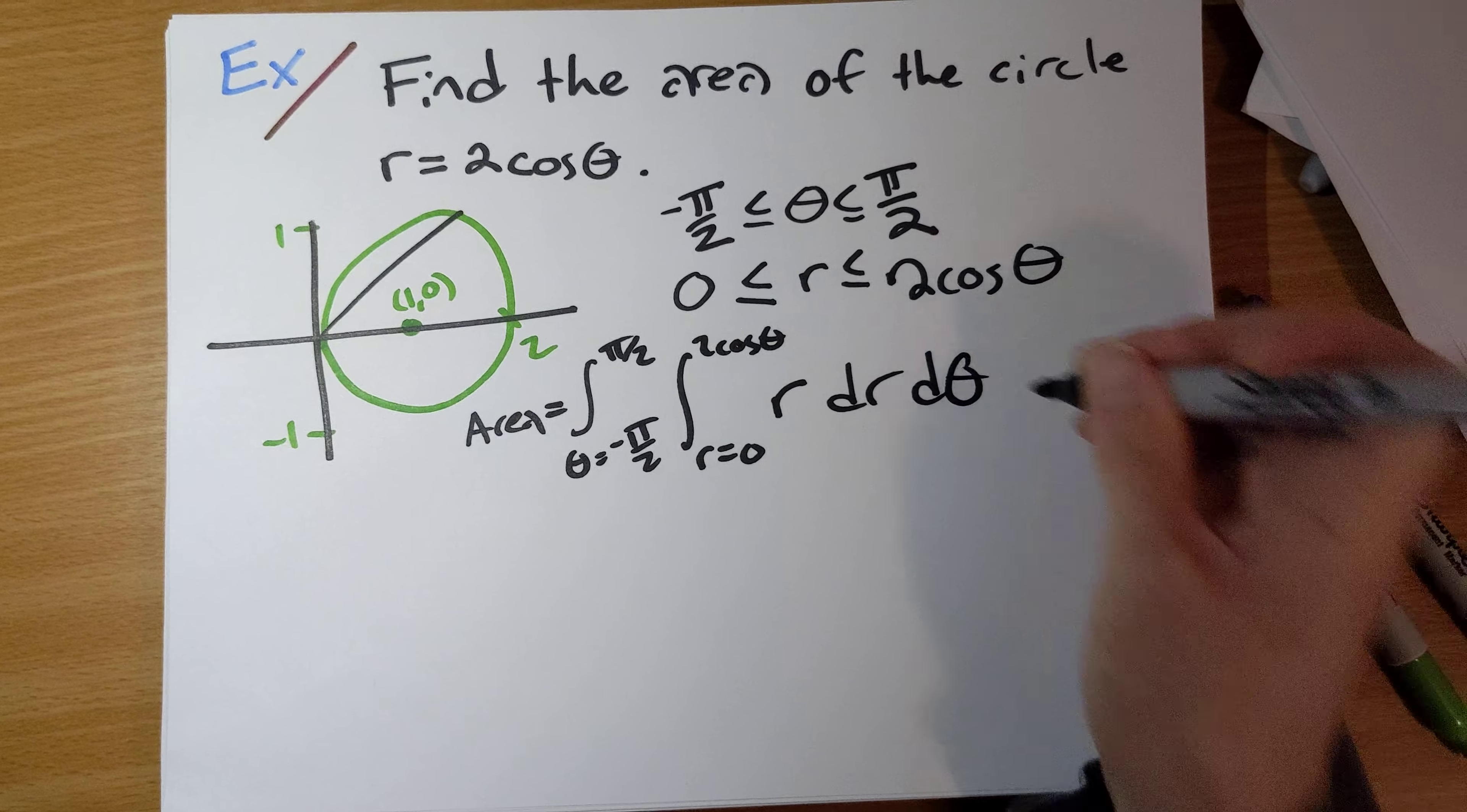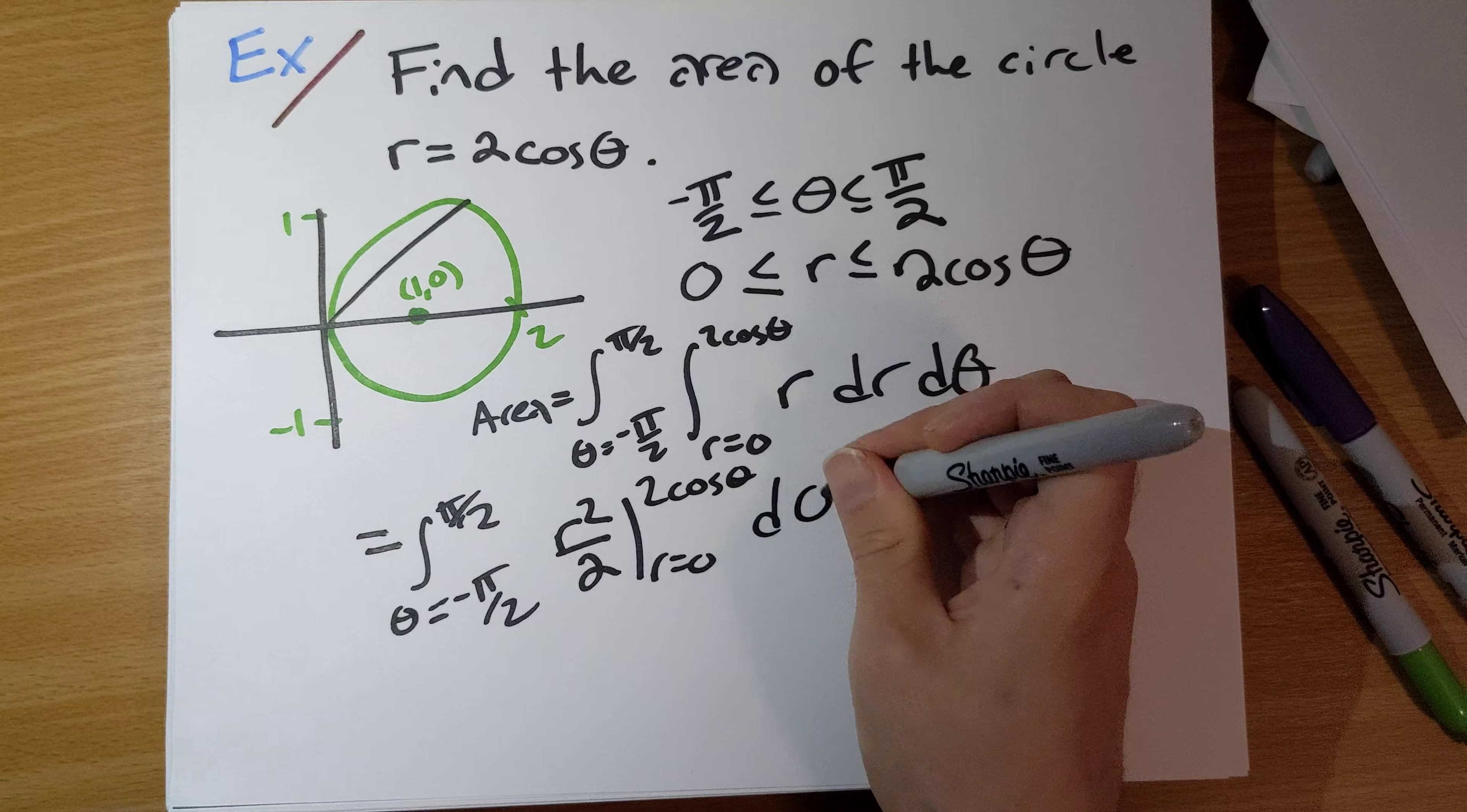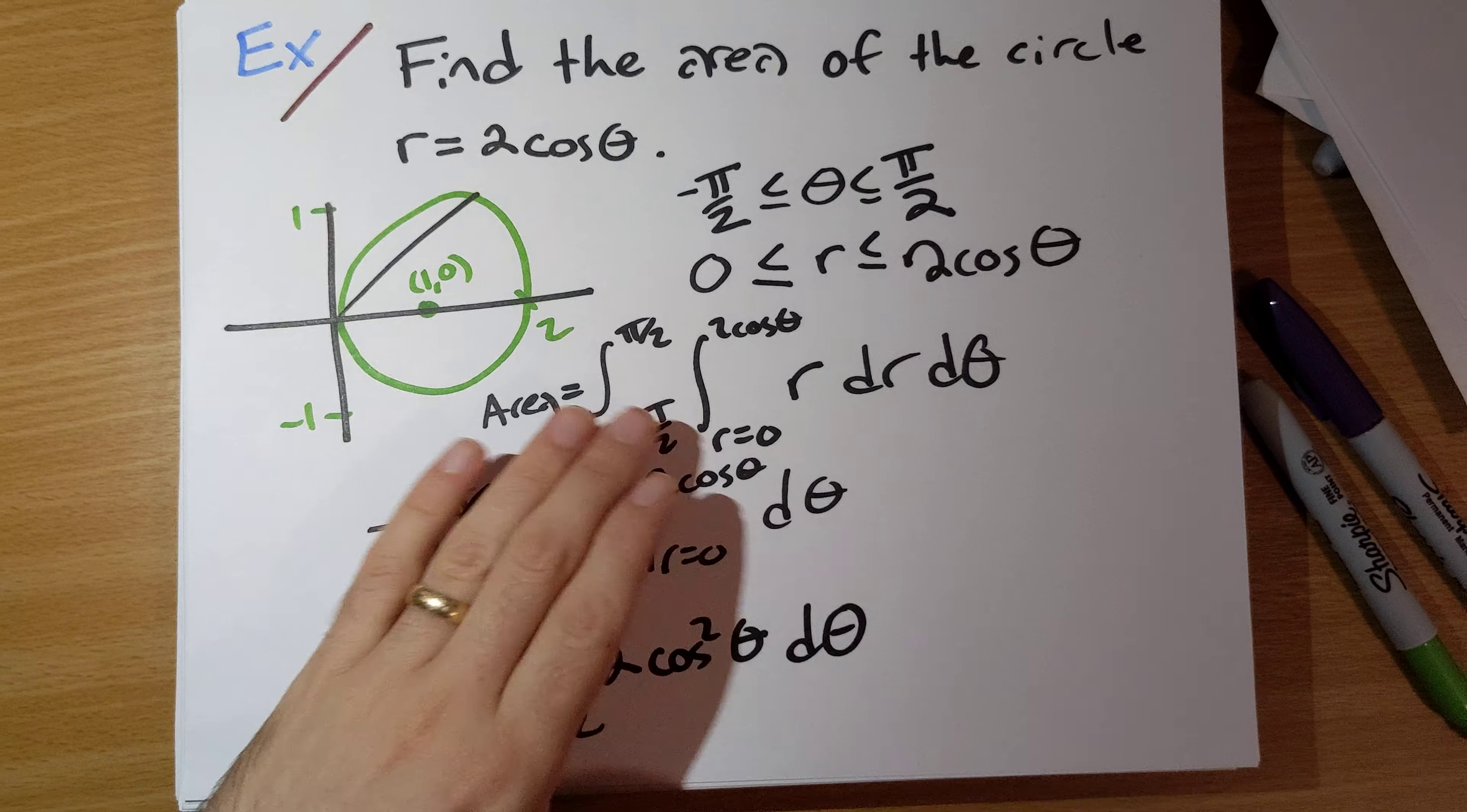What happens now? We end up with θ, we still have this here, negative π over 2 to π over 2. And then the antiderivative of r is r squared over 2. Plug in 0 and 2 cosine θ, dθ. This is going to give us θ from negative π over 2 to π over 2. When we plug in 0, we just subtract out 0. Plug in 2 cosine θ will give us 2 cosine squared θ dθ.